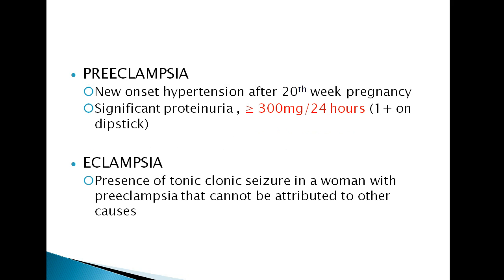For preeclampsia: preeclampsia is hypertension occurring after 20 weeks of pregnancy plus significant proteinuria. When you do a 24-hour urine collection, you will see 300 mg of protein in 24 hours. Or when you do urine FEME, you will see 1 plus or 2 plus. When you do FEME, you must exclude one thing first — infection — because urinary tract infection in pregnancy is very common.